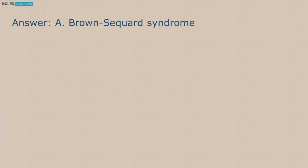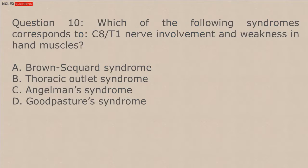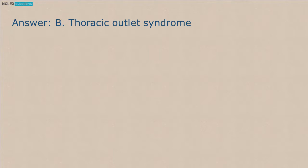Question 10: Which of the following syndromes corresponds to C8-T1 nerve involvement and weakness in hand muscles? A. Brown-Séquard Syndrome. B. Thoracic Outlet Syndrome. C. Angelman's Syndrome. D. Goodpasture's Syndrome. Answer: B. Thoracic Outlet Syndrome.